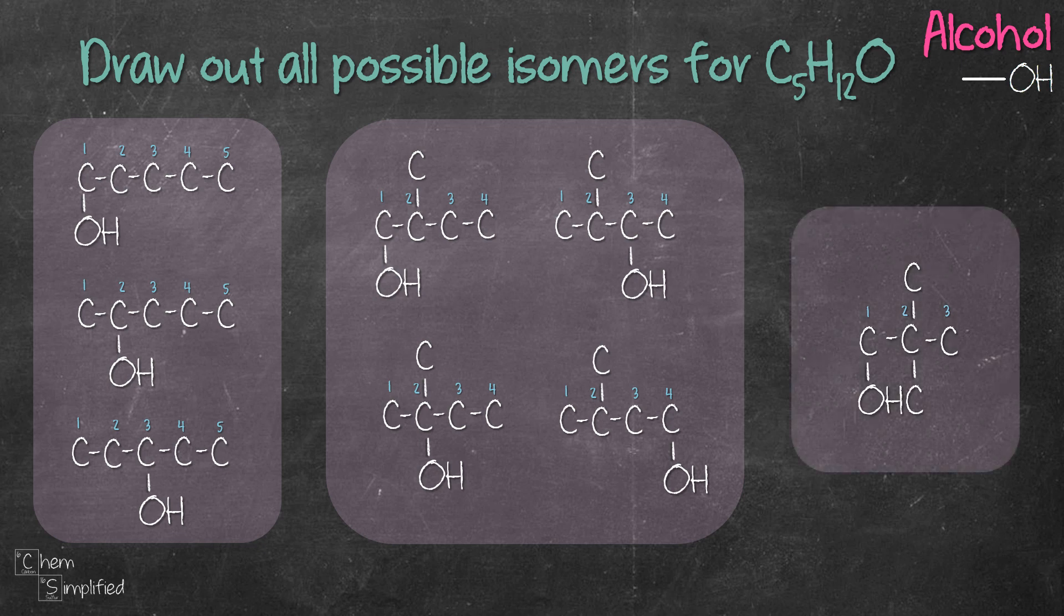Do you see how we drew the alcohols in a systematic way? We started with five carbon chain, so we drew five carbons straight in a row and then we start moving the OH from carbon number one all the way to carbon number three and then we exhausted all the possibilities. Then we move on to four carbon chain. So we have four carbon chain with the fifth carbon sticking on carbon number two. So we keep that structure and then we stick OH on carbon number one and then we keep moving it until we exhausted all possibilities and then we move on to three carbon chain. Since it's impossible to have two carbon chain with five carbons, so we stop at three carbon chain.